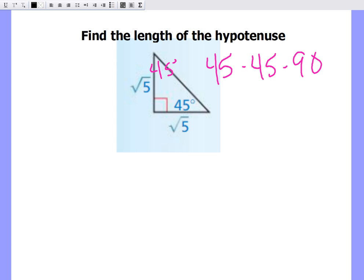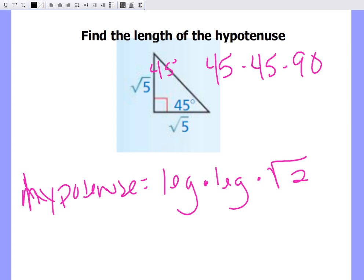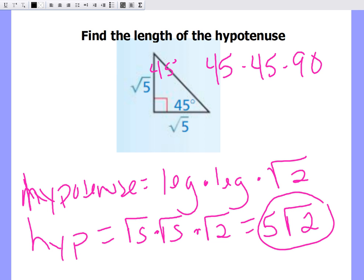So I will take the hypotenuse to equal the first leg times the second leg times the square root of 2. I am going to conclude that the hypotenuse is square root of 5 times square root of 5 times the square root of 2. And that leaves me, since square root of 5 times square root of 5 is 5, I will leave with 5 square root of 2 for the length of my hypotenuse.